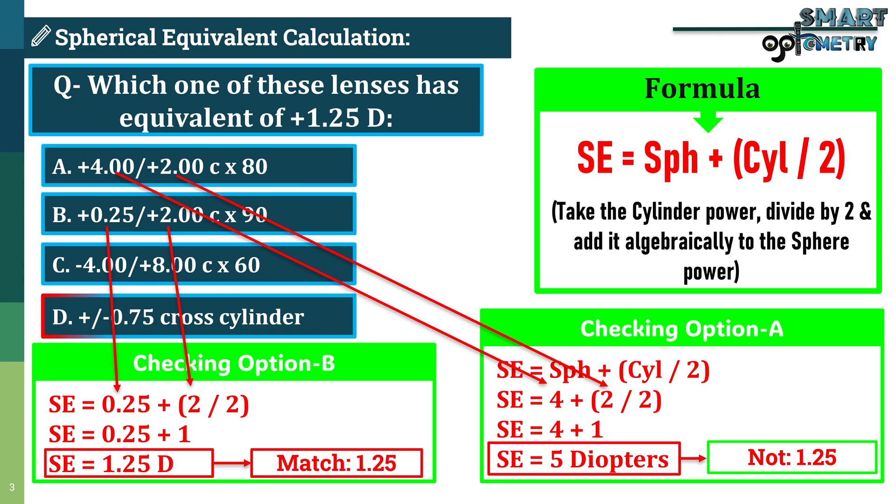Just for your knowledge, option D mentions a cross cylinder. The spherical equivalent of any cross cylinder is always 0, so that is also incorrect. Therefore, the correct answer is option B.